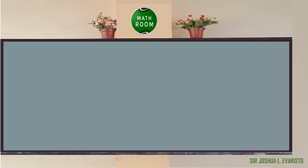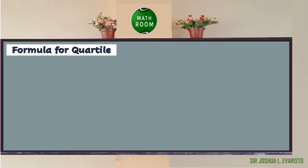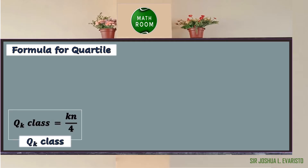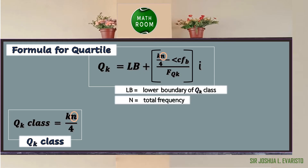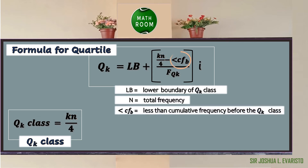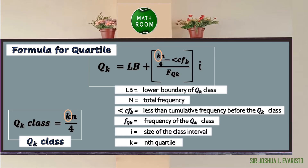Now let us determine the formula we're going to use to solve the quartile value for grouped data. In finding the value of a quartile, we first determine the Q sub k class using the formula: Q sub k class = k × n ÷ 4. Then we apply the quartile formula: Q sub k = lower boundary + [(k × n/4 − less-than cumulative frequency before the quartile class) ÷ frequency of the quartile class] × interval. Here, LB is the lower boundary, n is the total frequency, CFb is the less-than cumulative frequency before the Q sub k class, f_Qk is the frequency of the Q sub k class, i is the class interval size, and k represents the nth quartile.